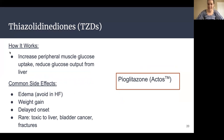Our next class is the TZDs, which work by increasing peripheral muscle glucose uptake and reducing glucose output from the liver. The main medication in this class used today is pioglitazone, or Actos as the brand name. Common side effects include edema — fluid retention — so this medication should be avoided in patients with heart failure. Weight gain can also occur partly due to that fluid retention. It has a delayed onset, taking around four to twelve weeks before you see the full effect. Very rare but worth mentioning: this medication can be toxic to the liver, can contribute to bladder cancer, and can increase the risk of fractures.